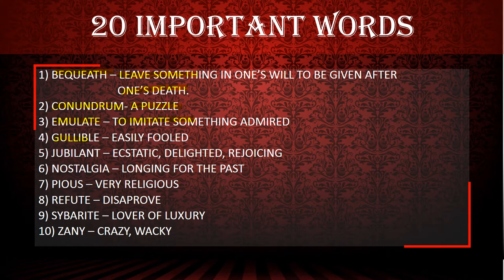Gullible means easily fooled. Jubilant means ecstatic, delighted, rejoicing — that means happiness, to feel happy.